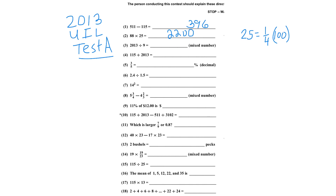On number 3, dividing by 9 — I can add the four digits and that gives me the remainder. 2 plus 0 plus 1 plus 3 is 6, so I have a remainder of 6. But I can't write 6 over 9 because I have to reduce that — 6 ninths is actually two-thirds. Then I add the first three digits: 2, 0, and 1, that's 3. Then 2 plus 0 is 2, bring the 2 down. So my answer is 223 and two-thirds as a mixed number.